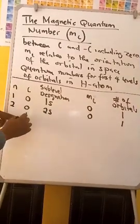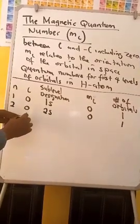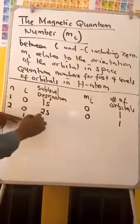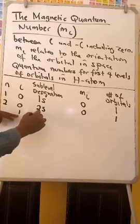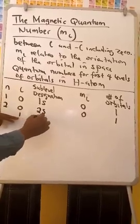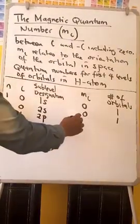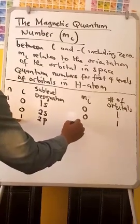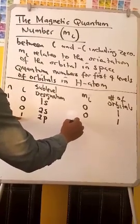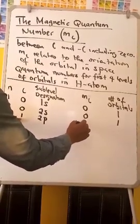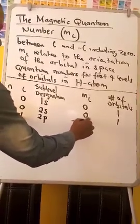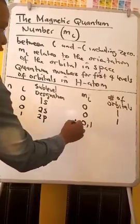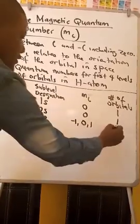When L is equal to 1, this is the P orbital — this is 2P. ML in this case will be negative 1, 0, and 1. Number of orbitals: 3.